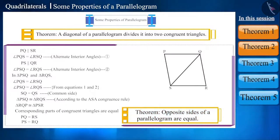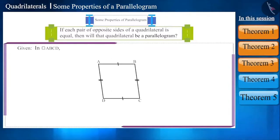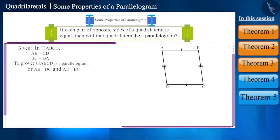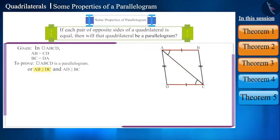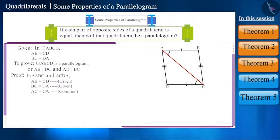Will the converse of this theorem also be true? That is, if each pair of opposite sides of a quadrilateral is equal, then will that quadrilateral be a parallelogram? Suppose the opposite sides of quadrilateral ABCD are equal; then we have to prove that it is a parallelogram. If we draw diagonal AC, with triangles ABC and CDA, we can see that side AB equals side CD, side BC equals side DA, and side AC is the common side. Hence, both these triangles are congruent according to the SSS congruence rule.